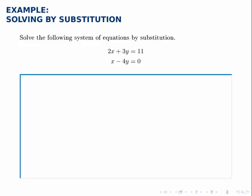Solve the following system of equations by substitution: 2x plus 3y equals 11, x minus 4y equals 0.